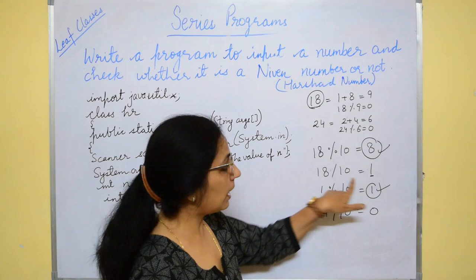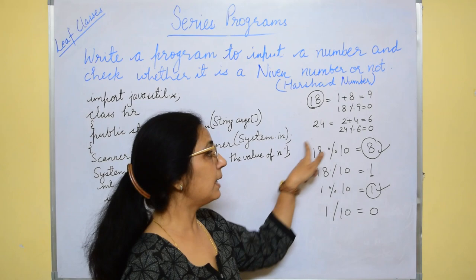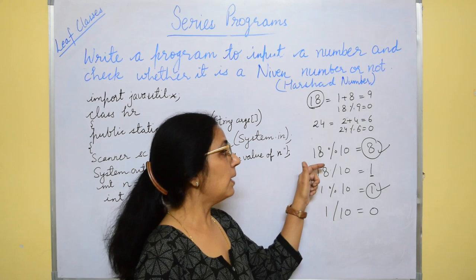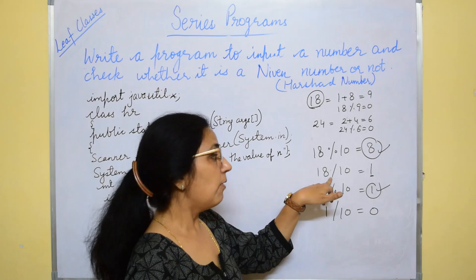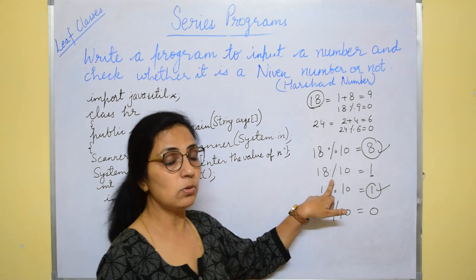Next if I will try to do 1 slash 10, it will be 0. So, till how long we have to repeat this process, till the quotient is more than 0. Although here you are getting 1, but again I have taken the remainder because this number entered by the user can be 2 digit, 3 digit or N digit number. You will use a method to find the remainder and the next number, how you will get? By taking the quotient.